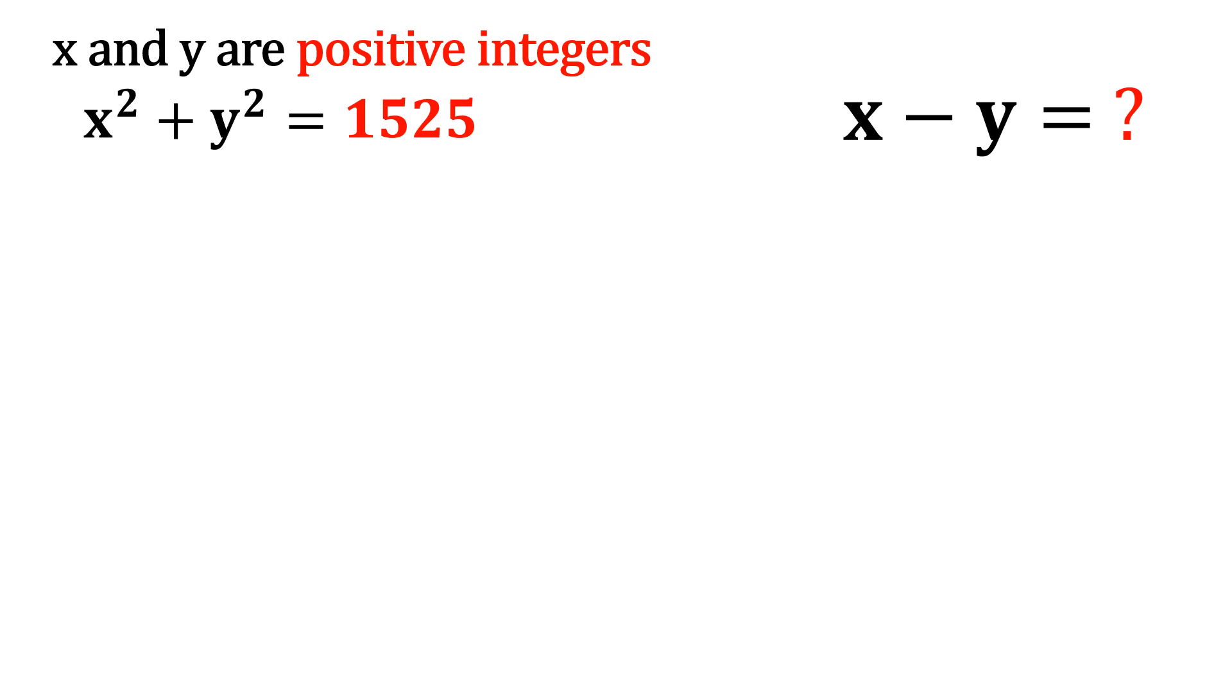x square plus y square is equal to 1525, x minus y equal to what? Given is x and y are positive integers.